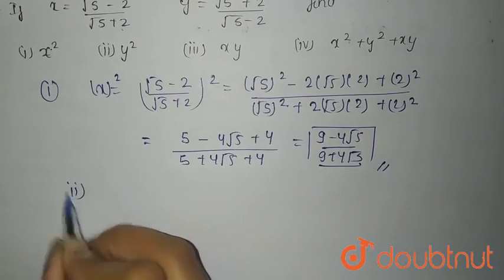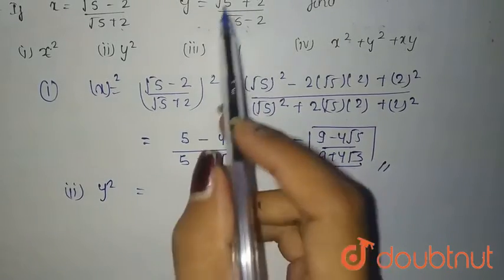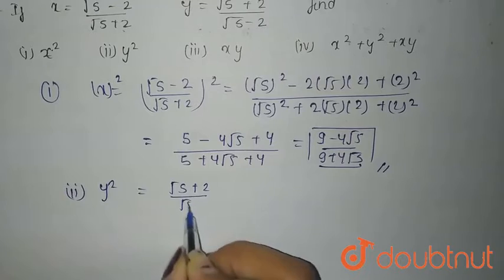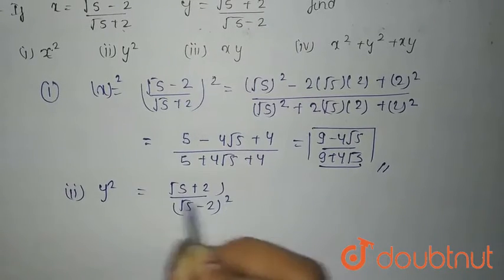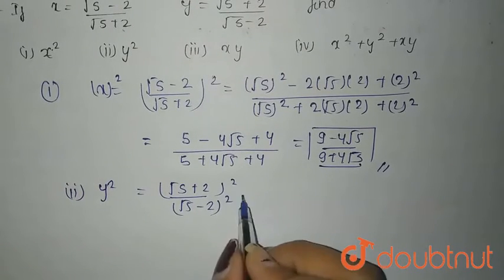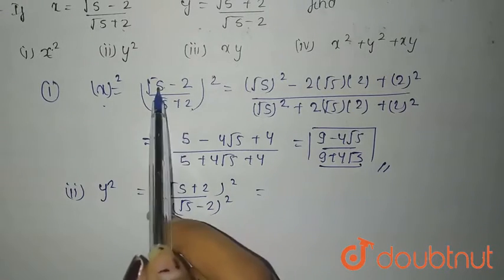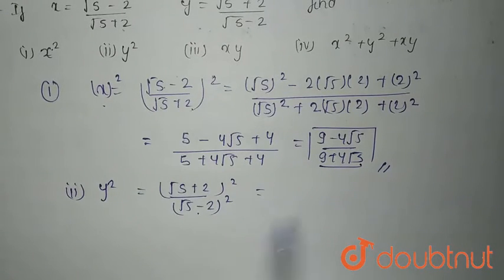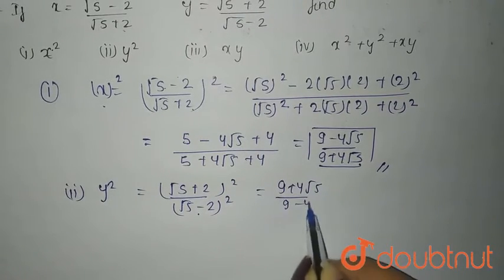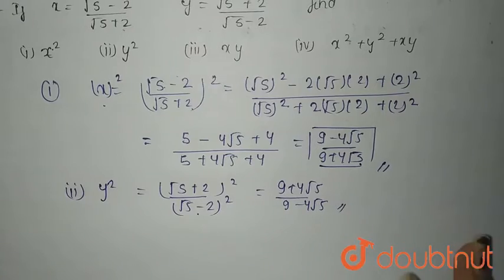Now, second is y squared. y squared is (√5 plus 2) upon (√5 minus 2), the whole square. This is (a plus b)² upon (a minus b)², which is the reverse of x squared. So, playing smartly, y squared equals (9 plus 4√5) upon (9 minus 4√5).